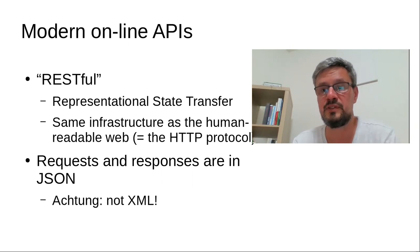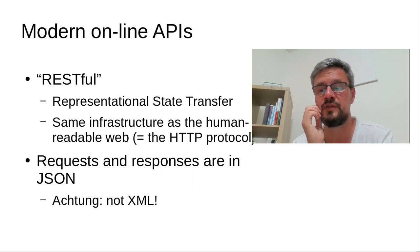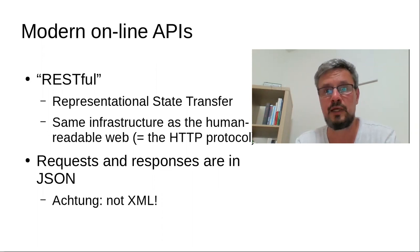We've seen the emergence of best practices for how to design a good online API. Good online APIs today usually ride on the same infrastructure as the human-readable web: the HTTP protocol with requests and responses flying between clients and servers, except the data being exchanged is not human-readable web pages but machine-readable data. In modern online APIs, that data is usually encoded in JSON — that's the format people typically use in APIs.